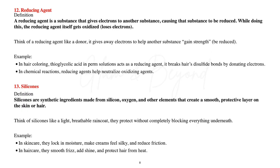Number twelve: reducing agent. A reducing agent is a substance that gives electrons to another substance, causing that substance to be reduced. While doing this, the reducing agent itself gets oxidized — meaning it loses electrons. Think of a reducing agent like a donor: it gives away electrons to help another substance gain strength. Example: in hair services, thioglycolic acid in perm solutions acts as a reducing agent, breaking hair disulfide bonds by donating electrons.